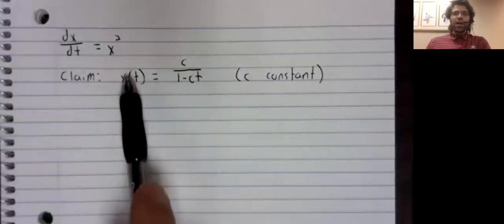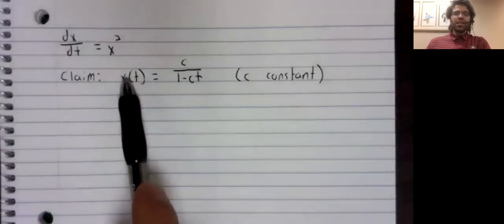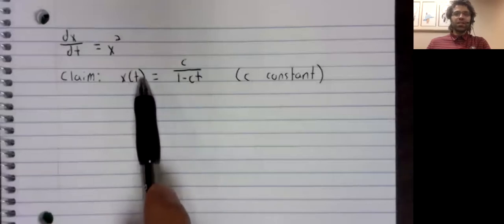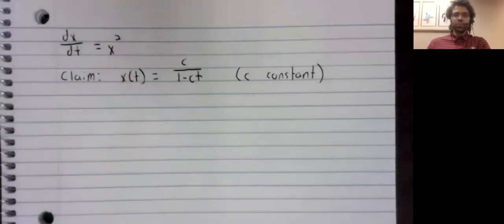Here, x is the name of the function, and t is our independent variable. And that's tradition. There's nothing we can really do about it. Sometimes we'll look at functions y of x, other times we'll look at functions x of t.